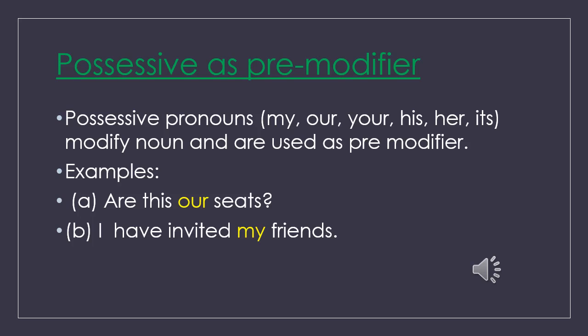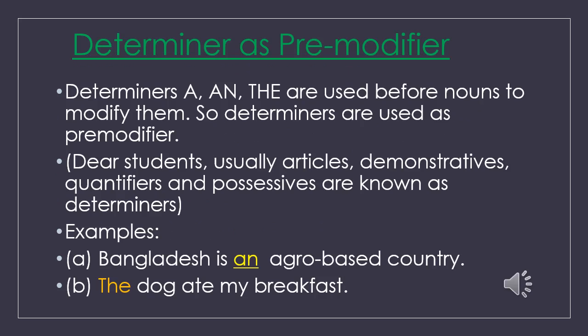Dear students, let's go to the following slide. Determiners as premodifier. Determiners — 'a' and 'the,' that is articles — are used before nouns to modify them, so determiners are used as premodifier. Note that except articles, demonstratives, quantifiers, and possessives are also known as determiners, but we use them according to the demand of the question. Example A: 'Bangladesh is an agro-based country.' Example B: 'The dog ate my breakfast.' Here, 'an' and 'the' as determiners are used as premodifiers of 'agro-based country' and 'dog.'